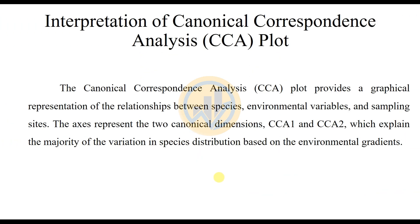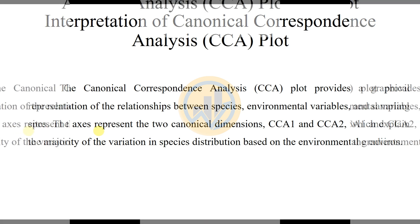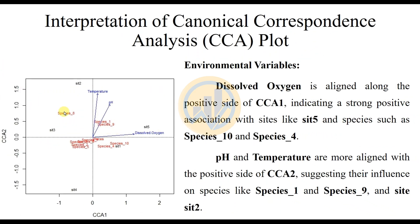The Canonical Correspondence Analysis plot provides a graphical representation of the relationships between species, environmental variables, and sampling sites. The axes represent the two canonical dimensions, CCA1 and CCA2, which explain the majority of variation in species distributions based on environmental gradients. The figure presents the CCA plot.